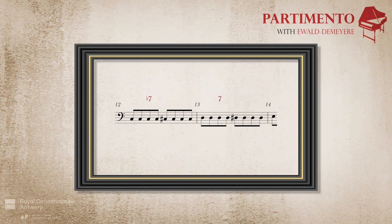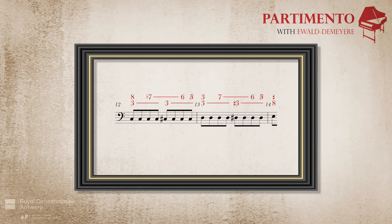A couple of suggestions for how to realize it. First, one could introduce sevens on the second beat of bars 12 and 13, which resolve to the sixth on the third beat, and diminished fifths on the fourth beats of those bars. Secondly, one could lengthen the sevenths on the second beat of bars 12 and 13 by a quarter note, turning them into suspensions on the middle of those bars, which resolve on the fourth beat.